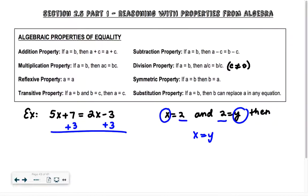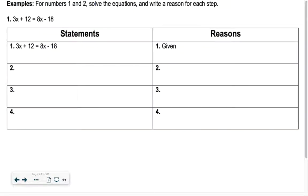And then the last one is substitution property. Transitive property is a special type of substitution, so if you just write substitution, it's fine. But it's like if you know that A is equal to B, then you can replace B with A, or A can replace B in any equations. All right, so let's start out with these.